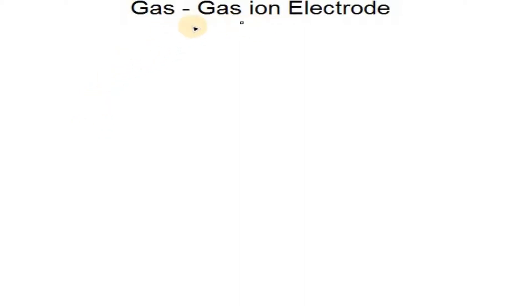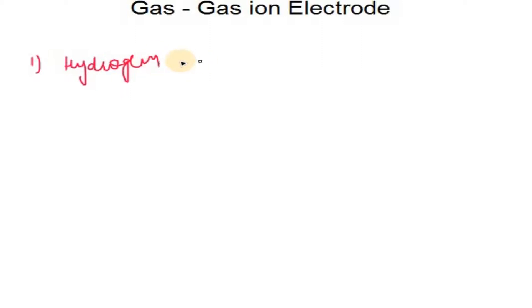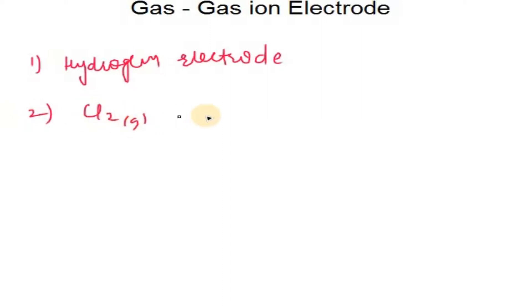We're going to talk about gas ion electrodes. There are two types: the first is the hydrogen electrode, and the second is the chlorine electrode (Cl₂).